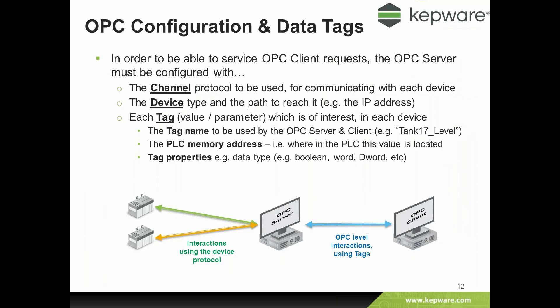In order for the OPC client to get data from the device effectively, the OPC server needs to provide a menu of available values, which is done through configuration. The OPC client makes a request upon the OPC server, which must then know how to locate that data and return the value. Within the OPC server, configuration is required: first, the channel — which specifies which communications protocol will be used — and each device in that channel must be given parameters such as the device type or PLC model and the unique path to reach it, such as the PLC's IP address.